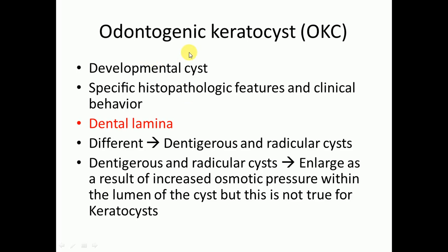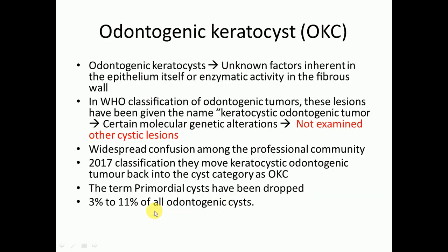Odontogenic keratocyst is a developmental cyst with specific histopathological features and clinical behavior. It arises from the dental lamina and is different from dentigerous and radicular cysts. The dentigerous and radicular cysts enlarge as a result of increased osmotic pressure within the lumen, but this is not true for keratocysts.